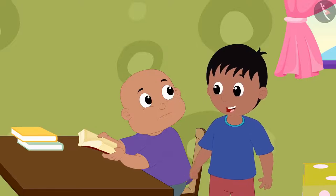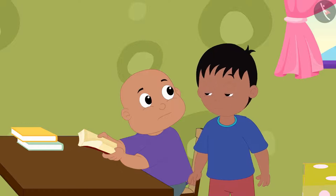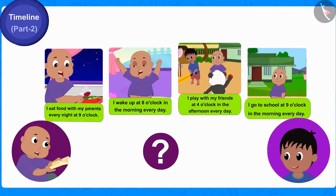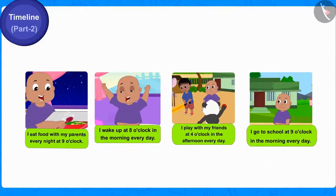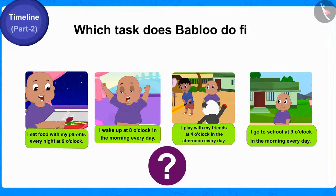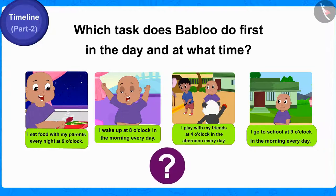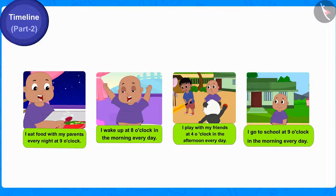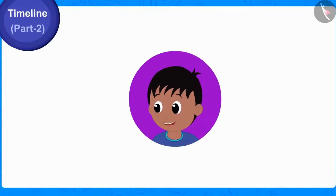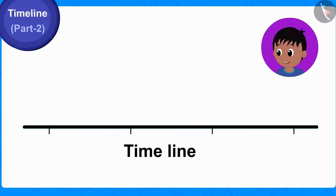Look, Bablu. First, we will write the very first task in your daily routine on the timeline. Of these four tasks, which task do you do first and at what time? Children, can you tell out of these four tasks which task does Bablu do first in the day and at what time? Well done, children, you have found the right answer. Bablu wakes up every day at 8 o'clock in the morning. Raju drew a timeline in Bablu's diary and wrote 8 o'clock in the morning as the very first task.